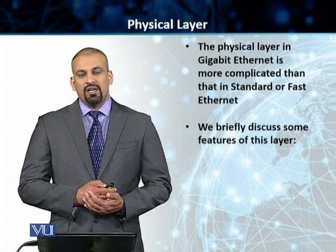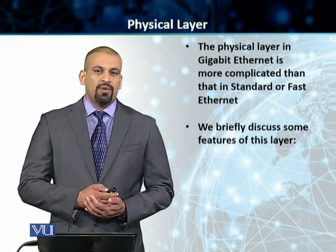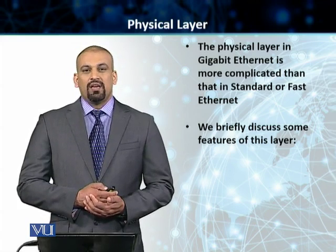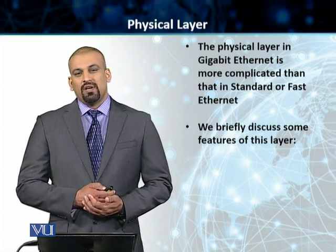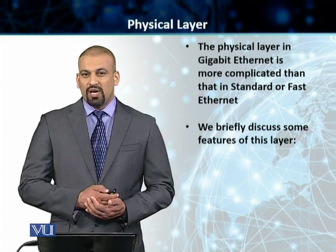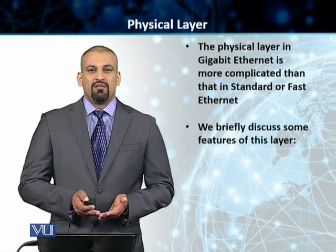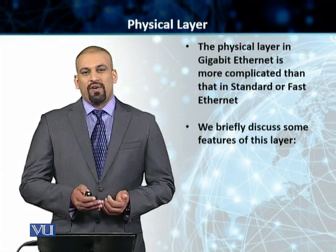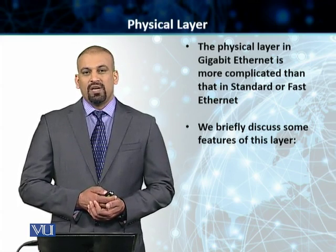The physical layer in Gigabit Ethernet required a lot of changes as well. To move from Fast Ethernet to 1 GigE Ethernet, the physical layer in terms of encoding and the different transmission media required — everything we were using before for Standard Ethernet and Fast Ethernet — actually became obsolete. We need to look at modified or newly developed physical layer technologies, and we will talk about some of them in the next slide.